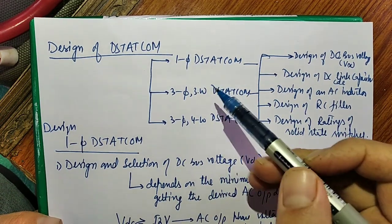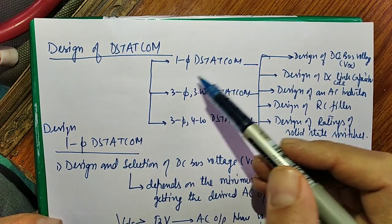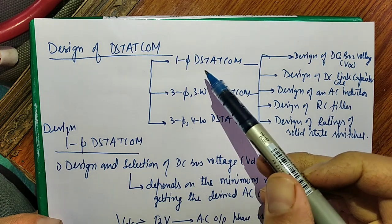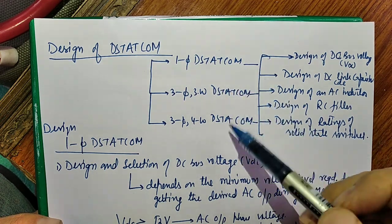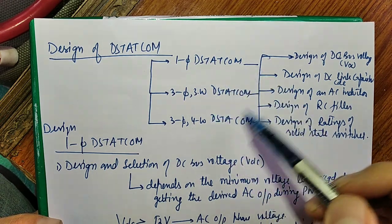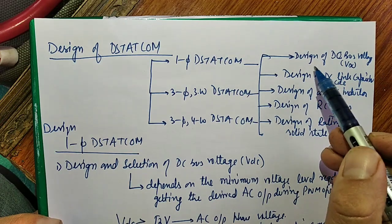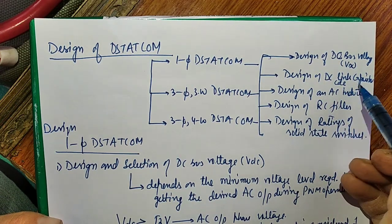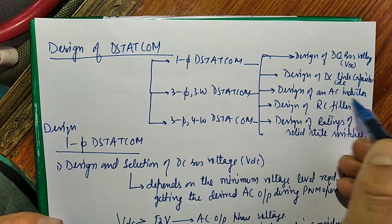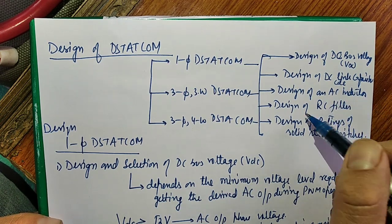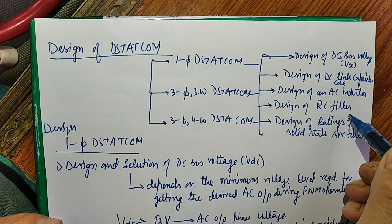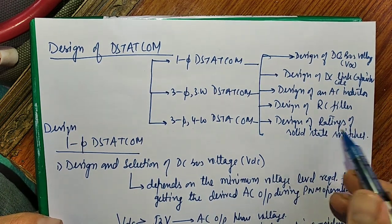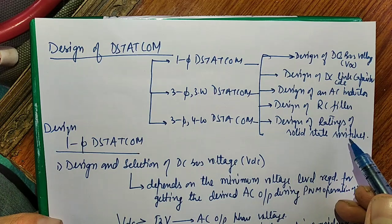We have three types of basic topologies: single-phase DSTATCOM, three-phase 3-wire DSTATCOM, and three-phase 4-wire DSTATCOM. For all three topologies, we have to do the design of DC bus voltage, DC bus capacitor, interfacing inductor, AC conductor, RC filter, and the ratings of solid-state switches — because the rating of solid-state switches is very important.